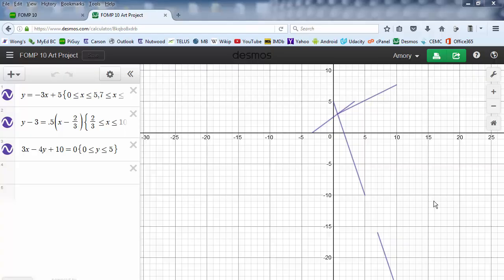This is part 4 of our art project. We're going to add circles to our graphs, or ellipses. You don't have to know all about circles and ellipses to be able to do this. It's rather simple.